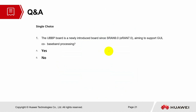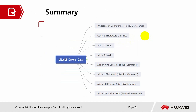Q&A session: The UBBP board is a newly introduced board in SingleRAN 9.0 and E-RAN 7.0, aiming to support GUL co-baseband processing — yes or no? Yes, this statement is correct. Summary of this section on eNodeB device data: we discussed the procedure for configuring eNodeB device data, the common hardware data list, how to add a cabinet, how to add a subrack, how to add an MPT board, how to add an LBBP board and UBBP board, and finally how to add a fan and a UPEU card. That's all — hope you enjoyed the session. Thank you. Bye.